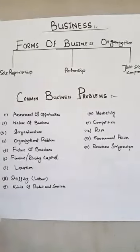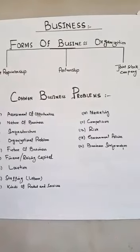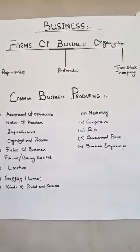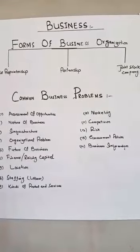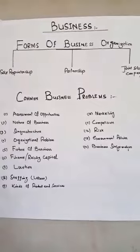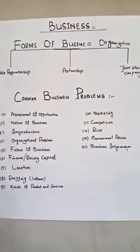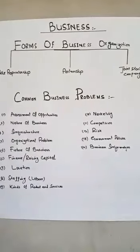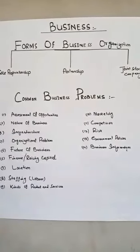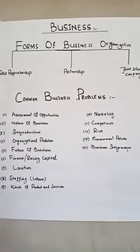Number two is partnership business. Partnership is basically an arrangement between two or more than two people to oversee the business operations and to share its profit and liabilities. In this form of business organization, the profit ratio is totally dependent upon the investment ratio.